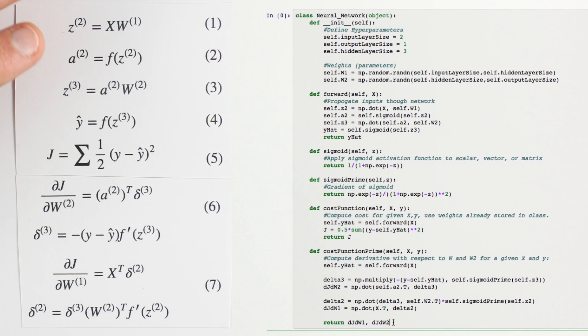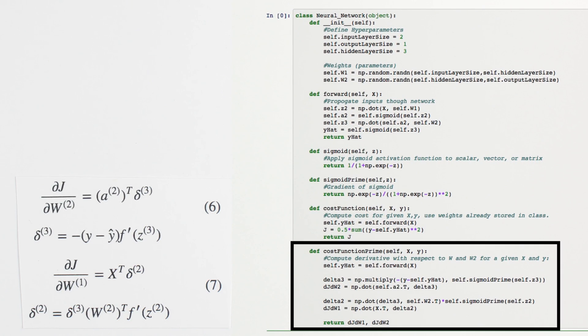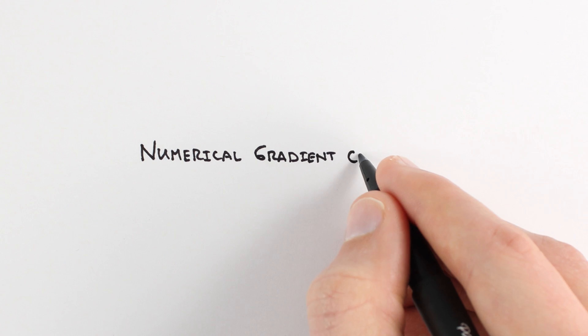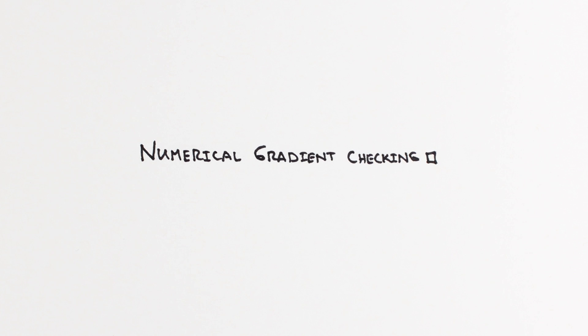A good solution here is to test the gradient computation part of our code, just as a developer would unit test portions of their code. We'll combine a simple understanding of the derivative with some mild cleverness to perform numerical gradient checking. If our code passes this test, we can be quite confident that we have computed and coded up our gradients correctly.